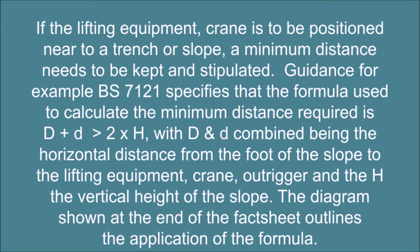If the crane is to be positioned near to a trench or slope, a minimum distance needs to be kept and stipulated. Guidance, for example BS7121, specifies that the formula used to calculate the minimum distance required is: d plus d greater than 2 multiplied by h, with d and d combined being the horizontal distance from the foot of the slope to the crane outrigger, and h the vertical height of the slope. The diagram shown at the end of the fact sheet outlines the application of the formula.